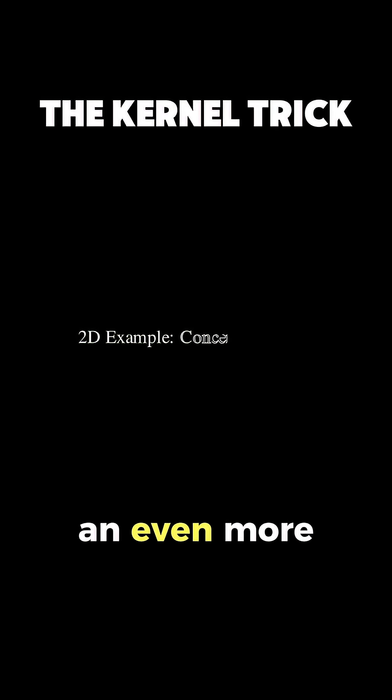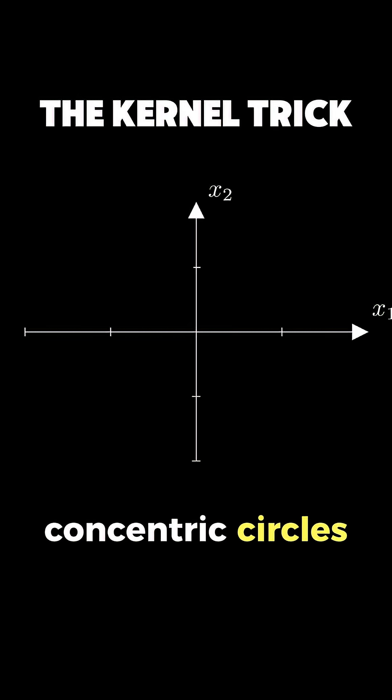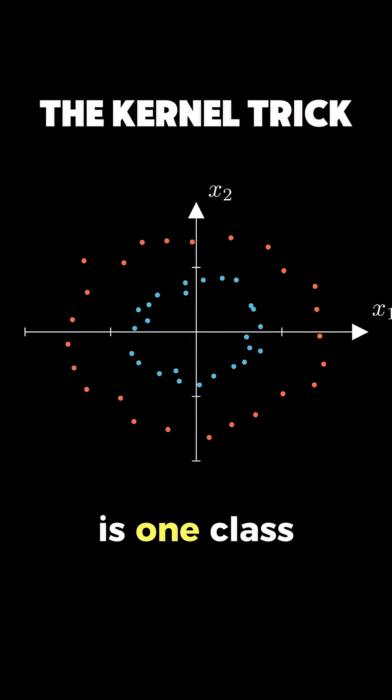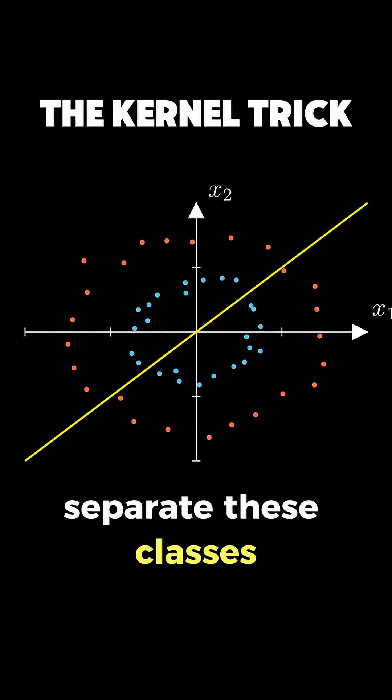Let's look at an even more complex example in 2D. Here we have data arranging concentric circles. The inner circle is one class and the outer ring is another class. There is clearly no straight line that can separate these classes.